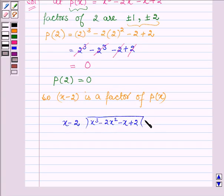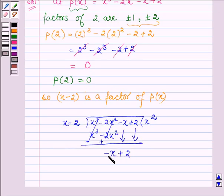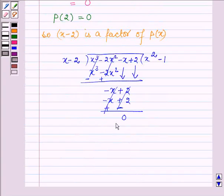First we multiply it with x squared. On multiplying x squared with x minus 2 we get x cubed minus 2x squared. On changing the signs these cancel out and we are left with minus x plus 2. Now we multiply x minus 2 by minus 1 and we get minus x plus 2. Again, on changing the signs we have the remainder as 0.